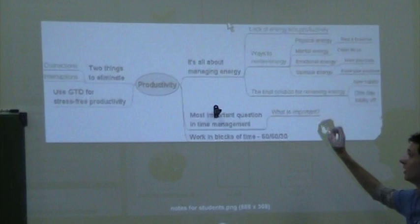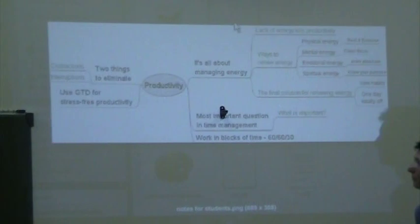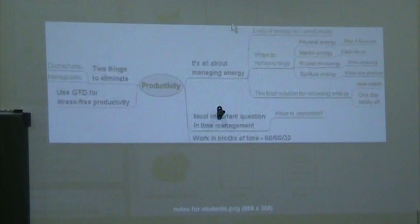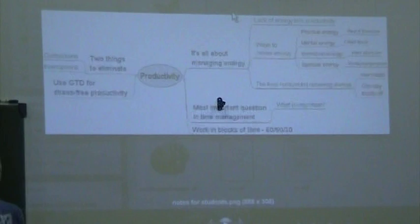So the most important time management question is what's important? You can work in lots of time, as we discussed. It's very productive. The two things you want to eliminate are distractions. Those are your bad habits that lead you somewhere else that you want. And interruptions, so you want other people to leave you alone for a while when you work at something. And use stress-free productivity. I just gave you little ideas from the book. Get the book. You'll know more about that.